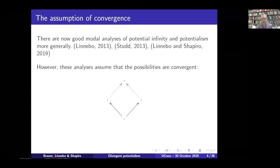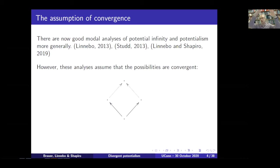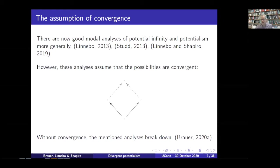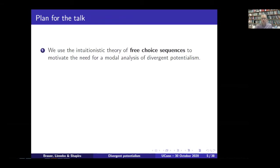These analyses tend to assume that the possibilities in question are convergent in the sense illustrated by the diagram here. If you're at the bottom node with a certain ontology that's been generated and you have two different generational possibilities — say you've got all the natural numbers and could generate the set of even numbers or the set of odd numbers — you could bring these possibilities together again by generating later whatever you didn't generate the first time around. But without convergence, these analyses break down. It's a point made by Ethan in a recent paper.